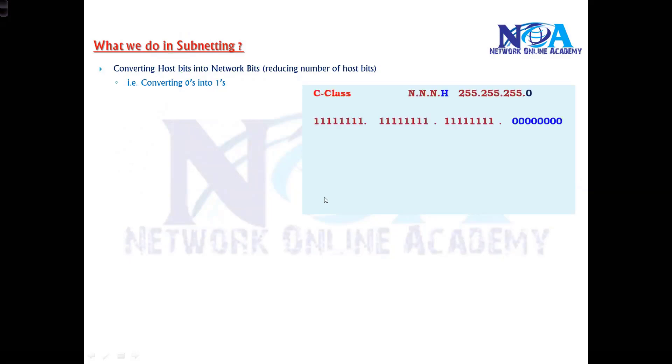If we take an example here, a simple C class—in basic IP addressing we have learned that C class by default supports three network and one host portion. The default subnet mask is 255.255.255.0, where 255 represents the network and 0 represents the host. If you write this 255.255.255.0 in terms of binary, there will be eight ones, eight ones, eight ones, and then eight zeros.